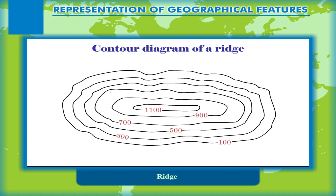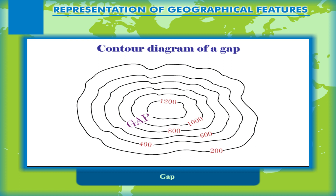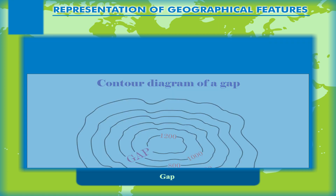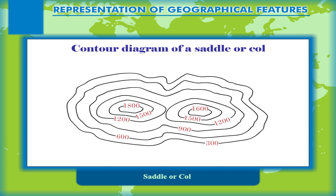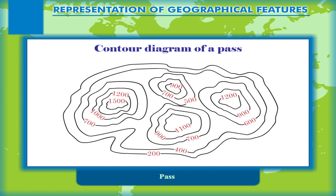Ridge: A ridge is an elongated hill with a narrow upland area. The contours showing a ridge are more or less elliptical in shape. Gap: A break in a line of hills or mountains affording a route through, similar to a gorge or ravine. Saddle or Col: A low point along a ridge, as between two mountain peaks. Pass: A wide gap between a line of mountains in a mountain chain that provides natural access for animals and humans in high mountains.